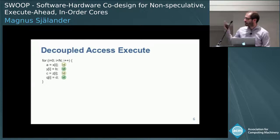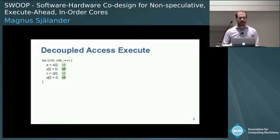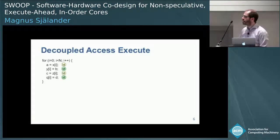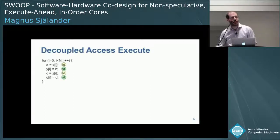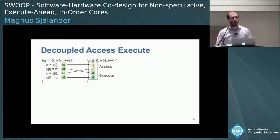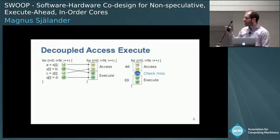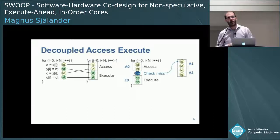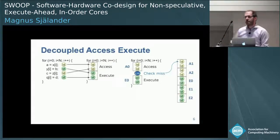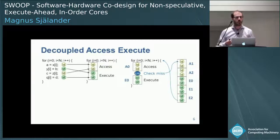Let's look at another example for decoupled access-execute. We have a simple sequence: a load followed by a store, then another load followed by a store. Normal decoupled access-execute would move the loads ahead of the stores. In Swoop, we introduce the check-miss, giving us access phase A0, then execute phase E0. The check-miss functions like a branch, pointing to another place in the code. We would have two more access phases, A1 and A2, followed by E0, E1, and E2. Once they have been executed, we jump back to the loop to continue normal execution.